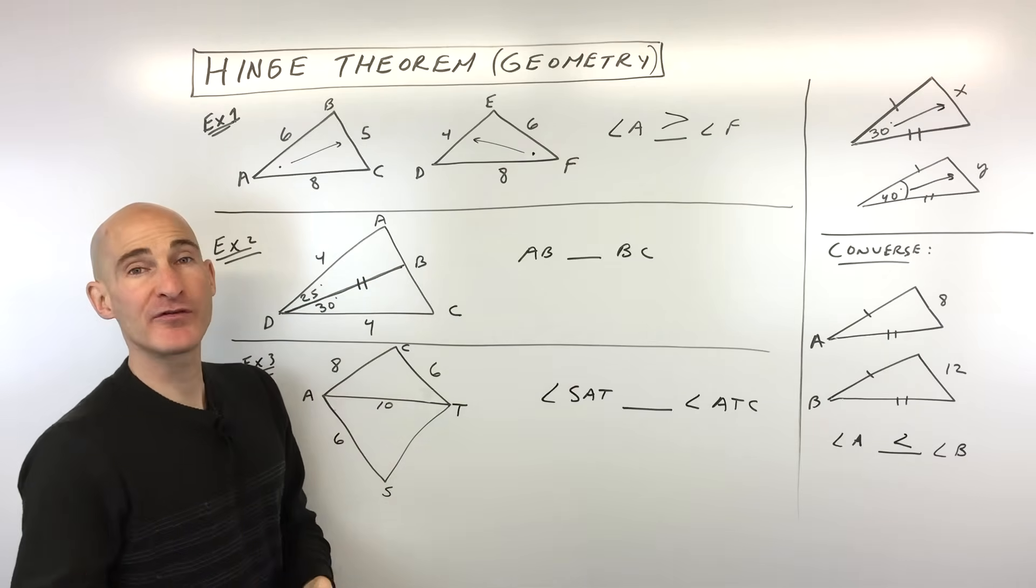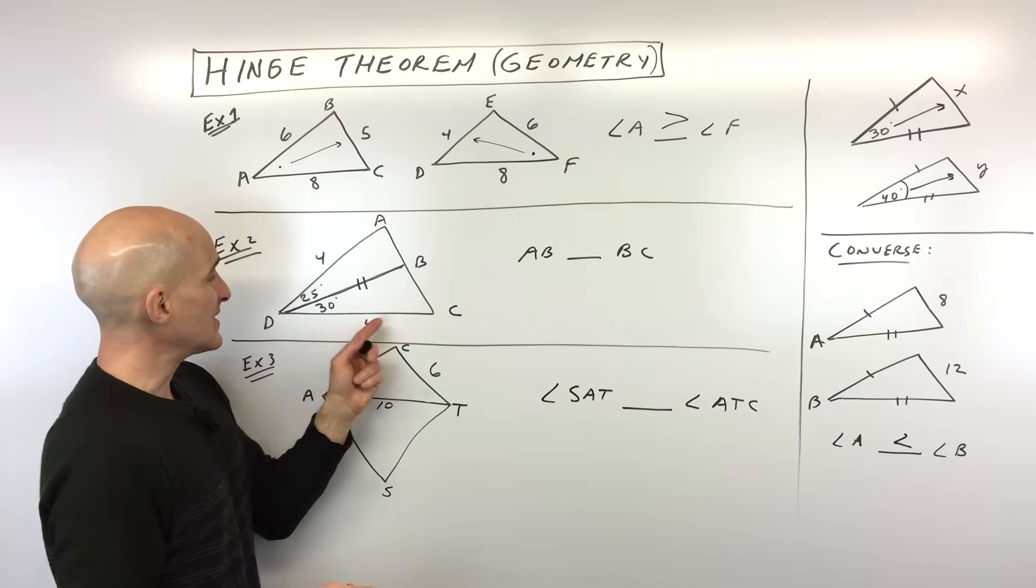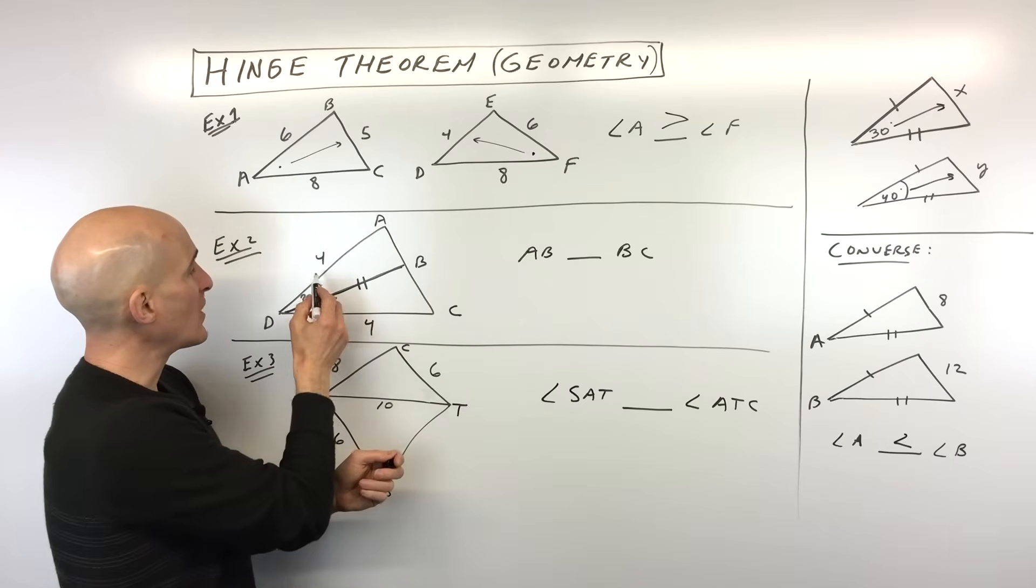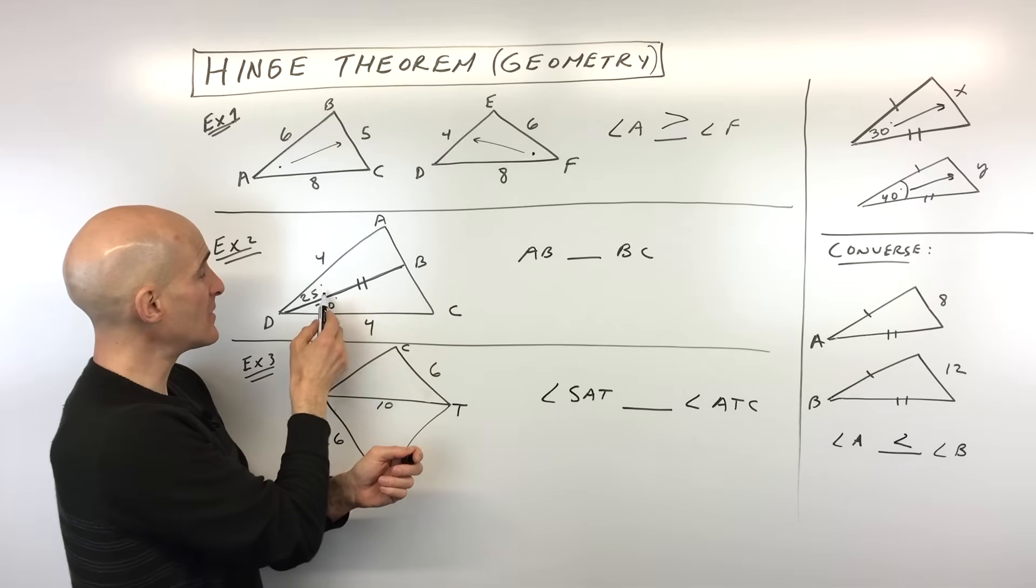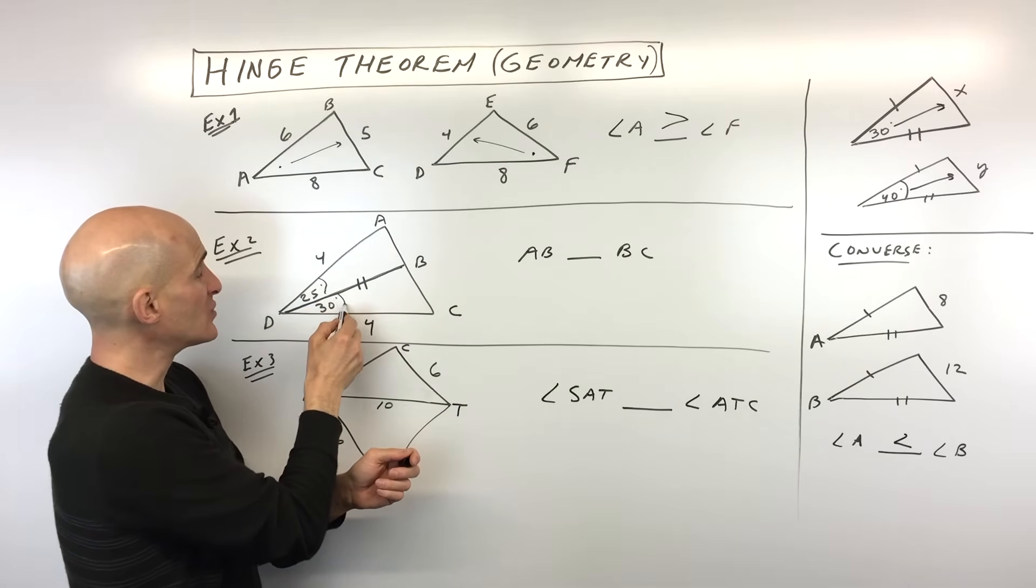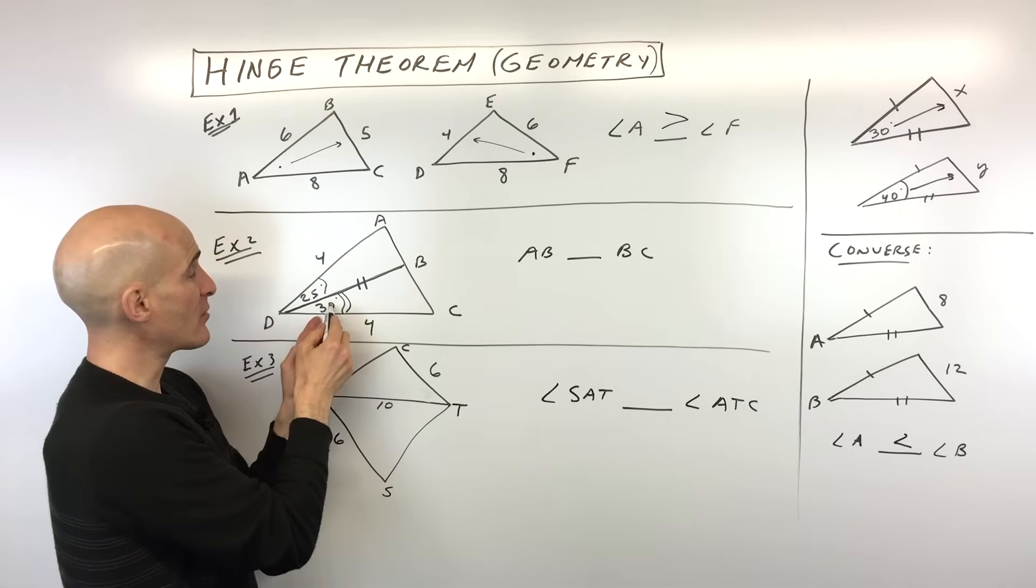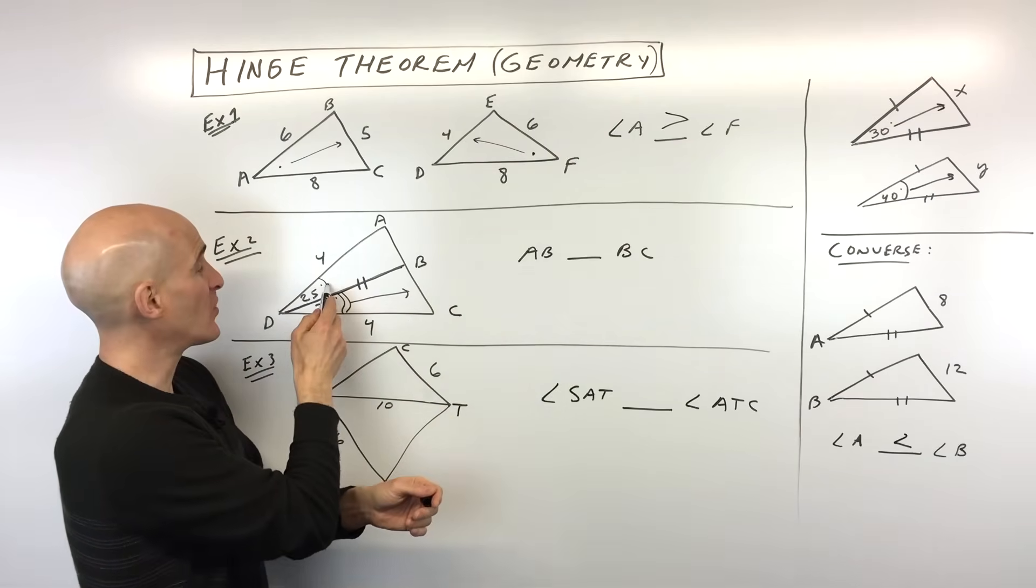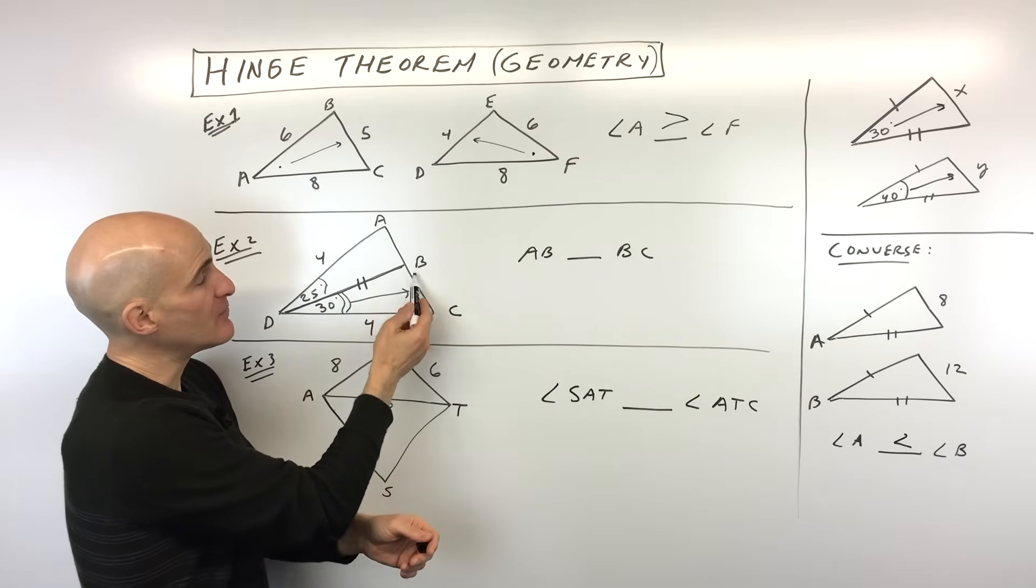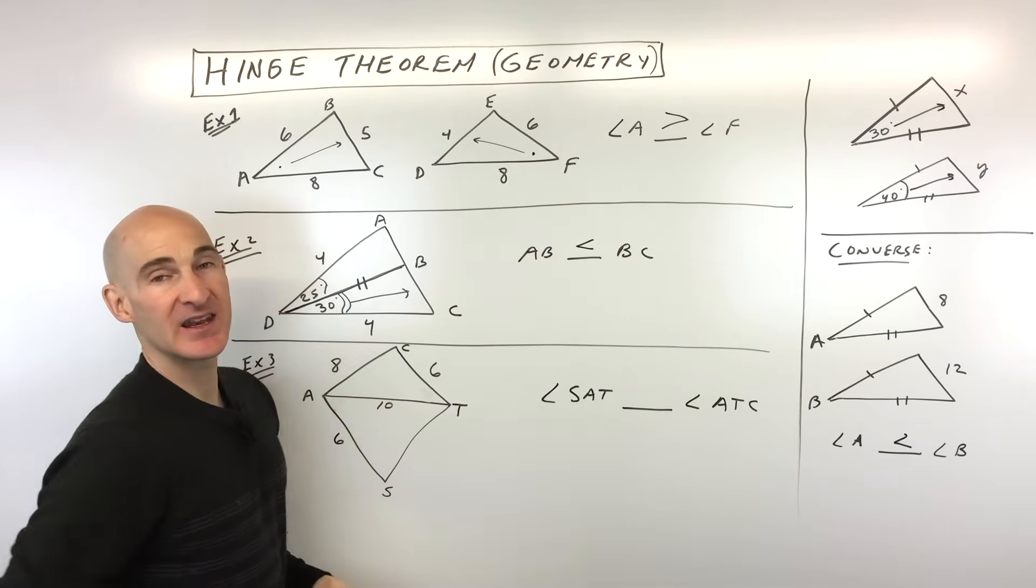So DB is congruent to itself by reflexive. And we can see that DC is congruent to DA. So we have two sides that are congruent to two sides in this triangle. But what's different is the angle that's in between those two sides. Here 30 degrees is going to be opening wider than 25 degrees. So you can see that BC is going to be greater than AB.